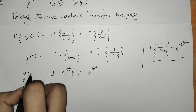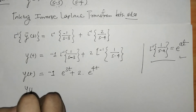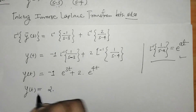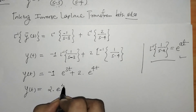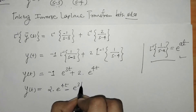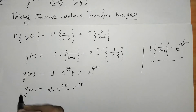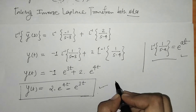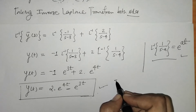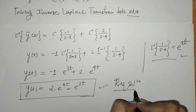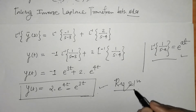So we get y(t) is equal to 2·e raised to 4t minus e raised to 3t. This is the required solution of the given differential equation by using the Laplace transform method.